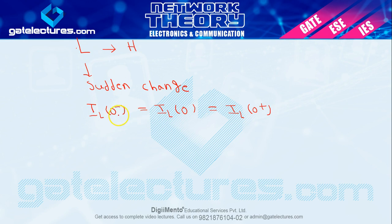Here zero minus means the position just before switching on the switch. Zero is the time of switching, and zero plus is the position just after switching on. So in this very short time, inductor current can never change. This is the property of inductance.